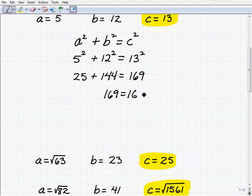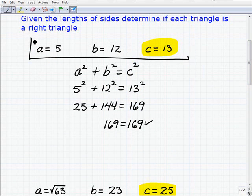So 169 equals 169. This checks out. All right, so if you were to draw this out, a right triangle. These are the lengths of a right triangle.